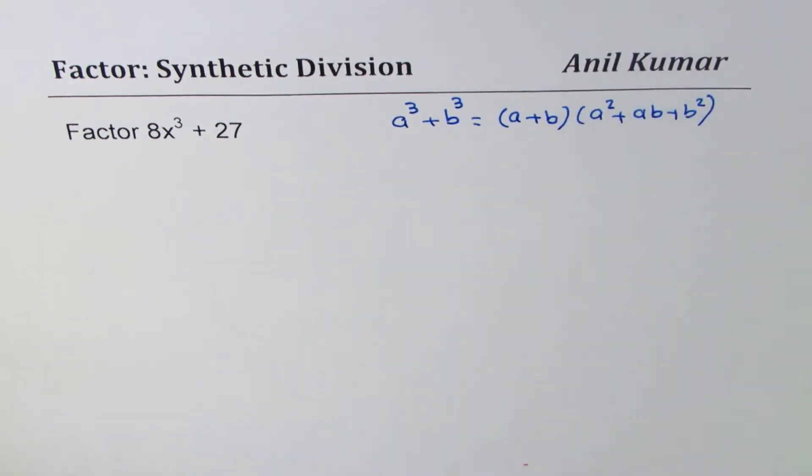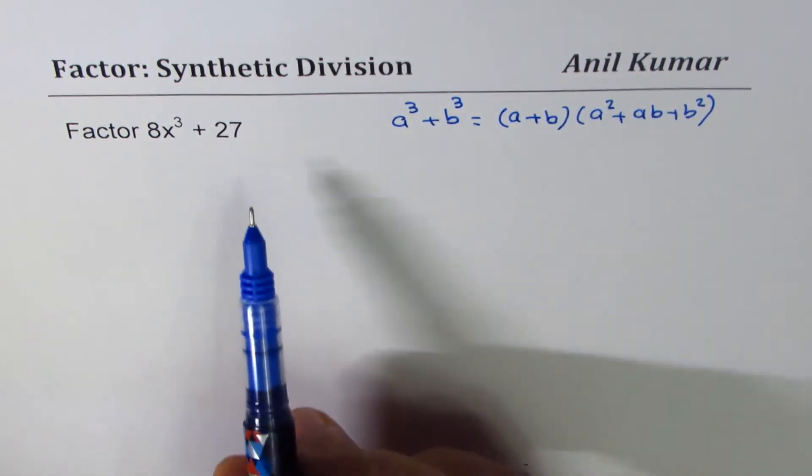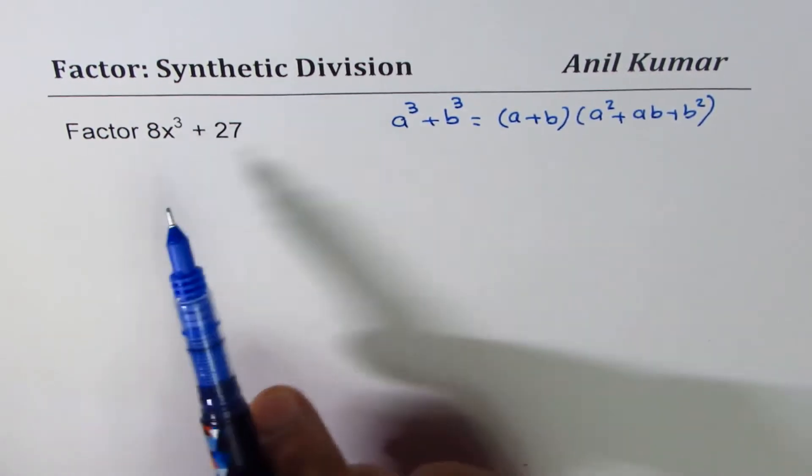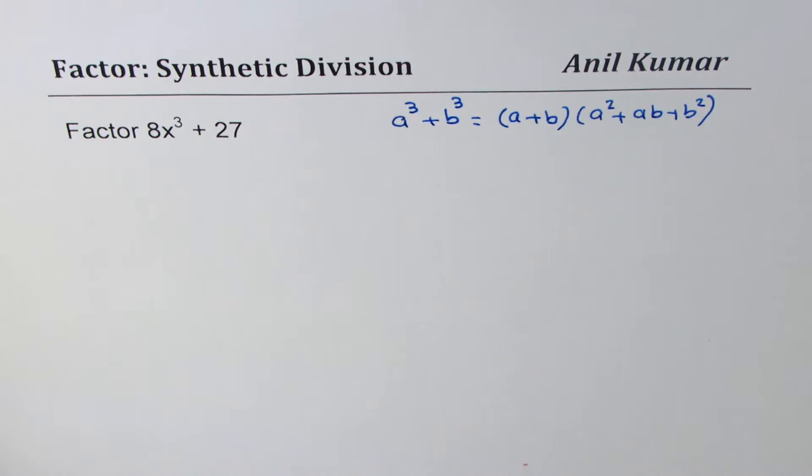That is very easy factoring for 8x³ + 27, but the idea is how do we factor using synthetic division. You can always pause the video, answer the question, and then look into my suggestions. Synthetic division is a shortcut to long division, so those of you who haven't done synthetic division can try long division.